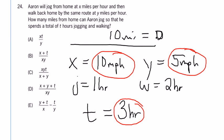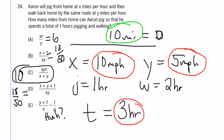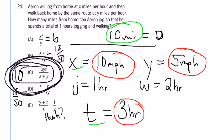The question is, which of A, B, C, D, or E gives us the answer of 10 miles? I encourage you to pause the video and actually plug them in. A will give you x times t — which is 30 — divided by y, which is 5: 30 over 5 is 6. B gives you a fraction, 13 fiftieths. D gives you 18 fiftieths. E gives some fractions I didn't feel like working out. The point is, C gives you 10, which is the distance.